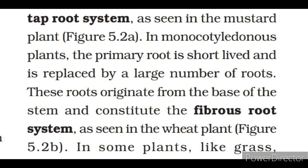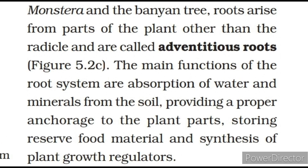In monocotyledonous plants, the primary root is short-lived and is replaced by a large number of roots. These roots originate from the base of the stem and constitute the fibrous root system, as seen in the wheat plant. In some plants like grass, monstera and the banyan tree, roots arise from parts of the plant other than the radicle and are called adventitious roots. The main functions of the root system are absorption of water and minerals from the soil, providing anchorage to the plant, storing reserve food material, and synthesis of plant growth regulators.